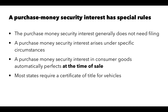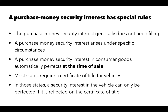When it comes to vehicles, most states require a certificate of title. A title is a formal notice of ownership. For vehicles, a security interest can only be perfected if that security interest is reflected on the certificate of title. So, even though a vehicle may sound like consumer goods, a security interest in it is not perfected until it is reflected on the certificate of title.